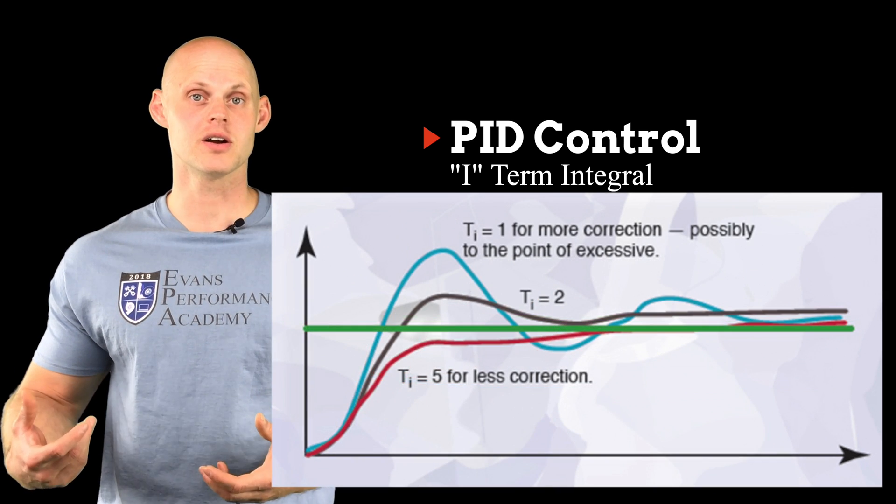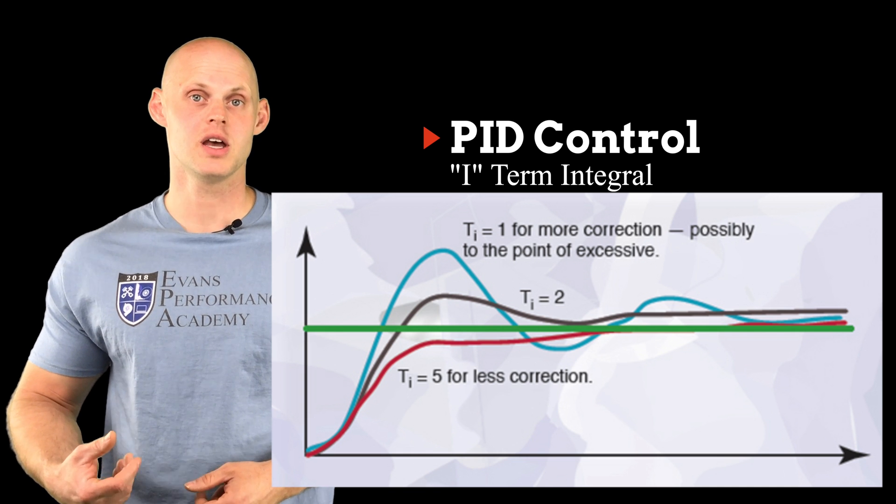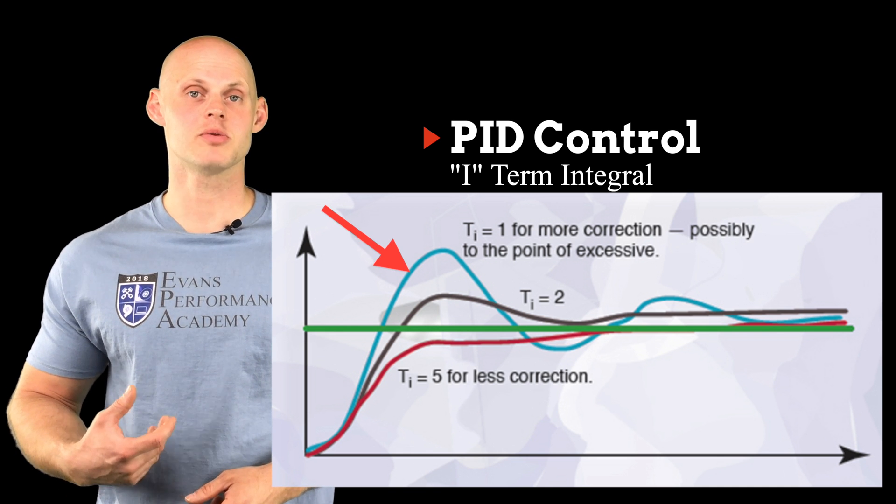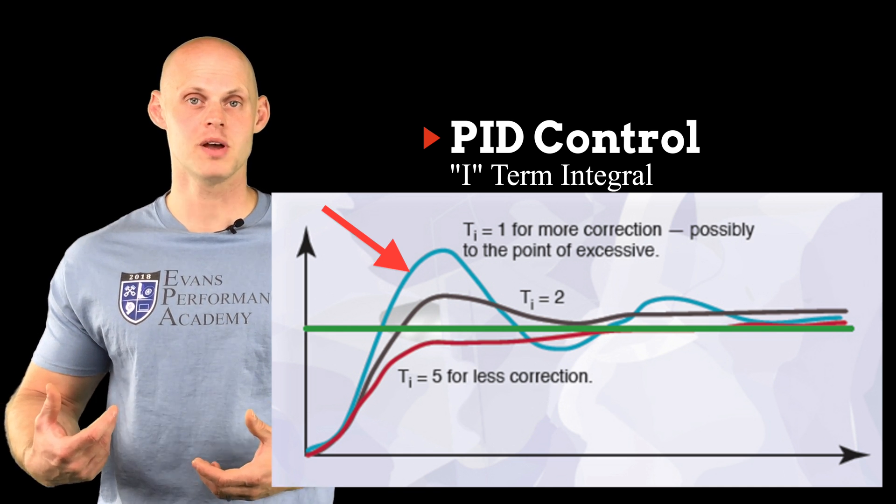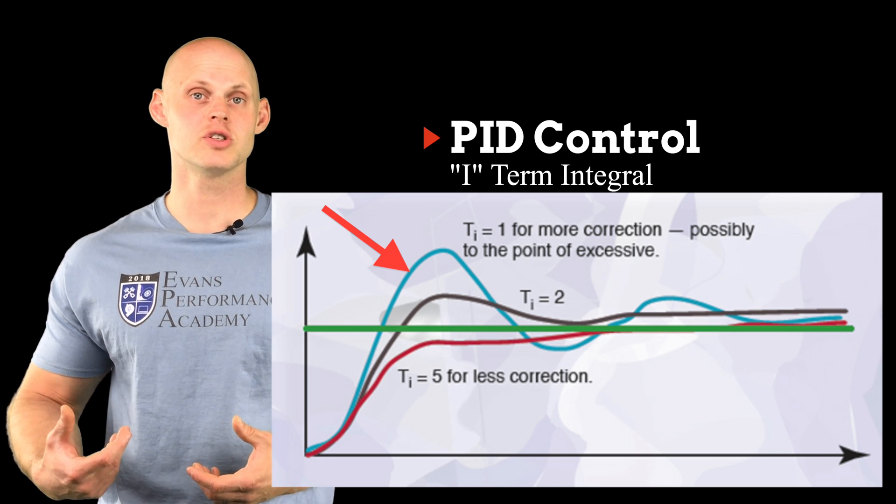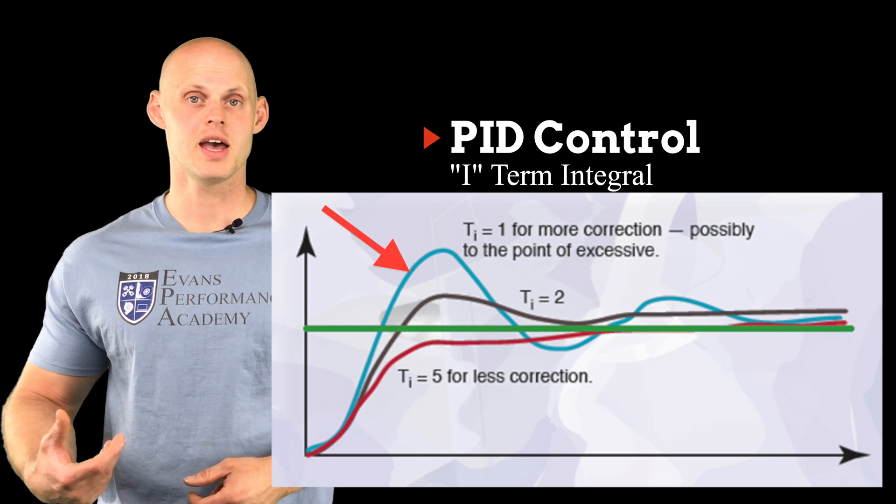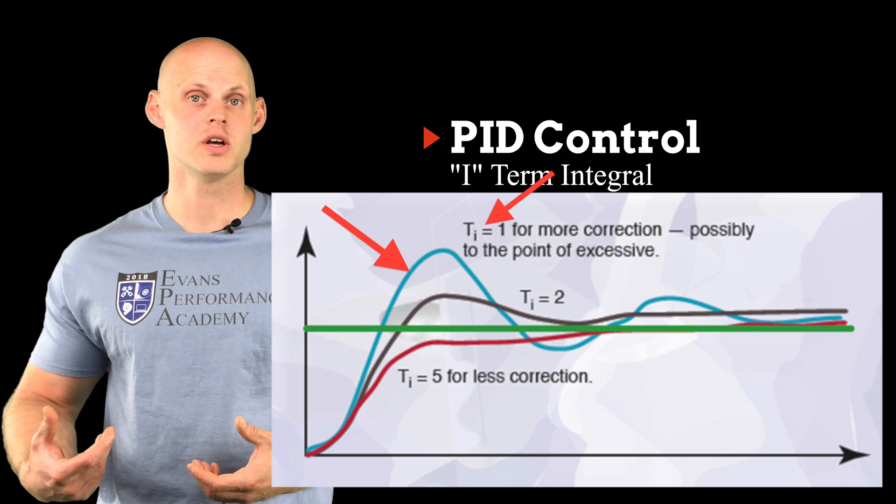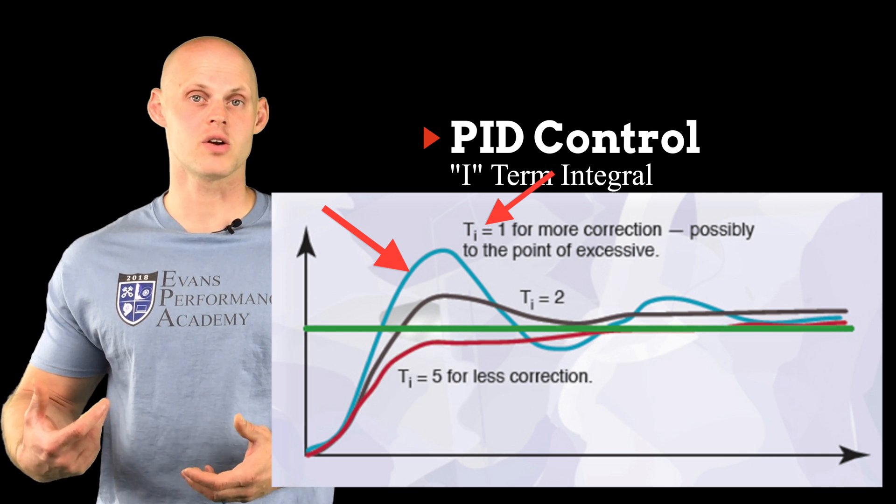So if we look at our example here, we can see that we have three different lines. Now the first blue line here is going to represent having our P term being very aggressive and having that overshoot in the oscillation start. And our I term is going to be very low, so we're not going to really correct for that at all.